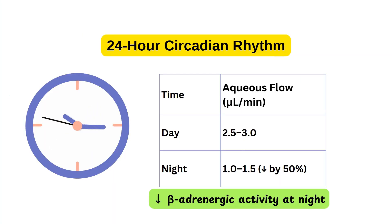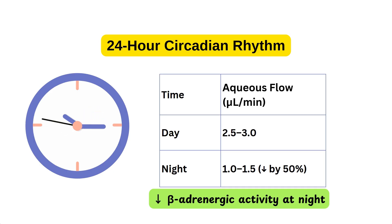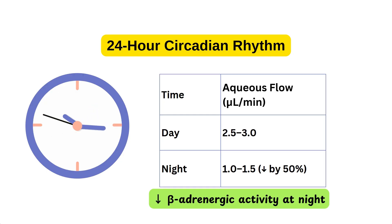Let's discuss circadian rhythms and aqueous humor. During daytime, the flow of aqueous is about 2.5 to 3 microliters per minute, and at nighttime it is about 1 to 1.5 microliters per minute — almost a 50% reduction at night, likely due to reduced sympathetic or beta-adrenergic activity.